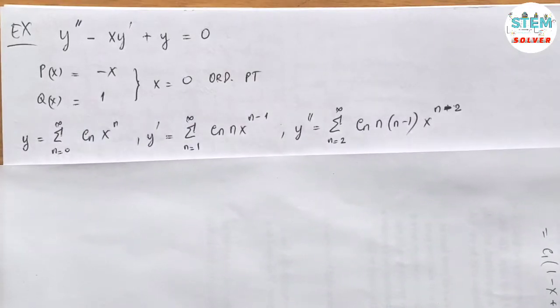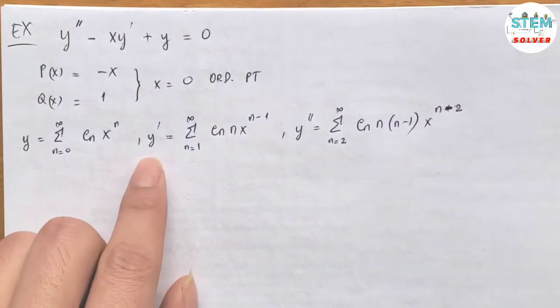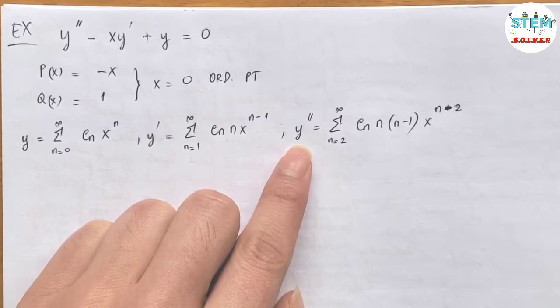Then our solution is given in this form: y equals power series from zero to infinity cn x to the n. And then I took the first derivative and the second derivative, which gives me this.